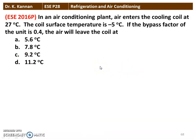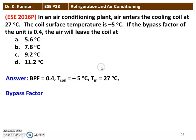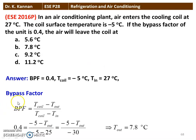Next question from the 2016 question paper: In an air conditioning plant, air enters the cooling coil at 27°C. The coil surface temperature is −5°C. If the bypass factor is 0.4, the air will leave the coil at what temperature? Using BF = (T_coil − T_out) / (T_coil − T_in): 0.4 = (−5 − T_out) / (−5 − 27). Solving, outlet temperature = 7.8°C.